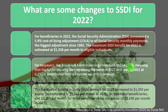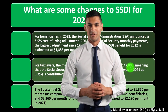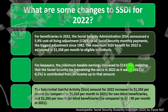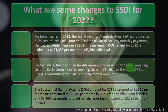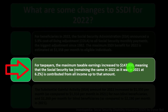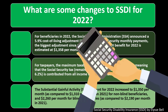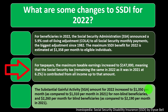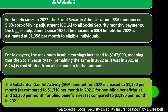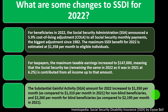Income above $147,000 is not subject to the 6.2% Social Security tax, which connects to the broader debate about whether Social Security is a safety-net program or a universal benefit program. The Substantial Gainful Activity — SGA — amount for 2022 increased to $1,340 per month for non-blind beneficiaries, up from $1,310 in 2021, and to $2,260 per month for blind beneficiaries, up from $2,190 in 2021.